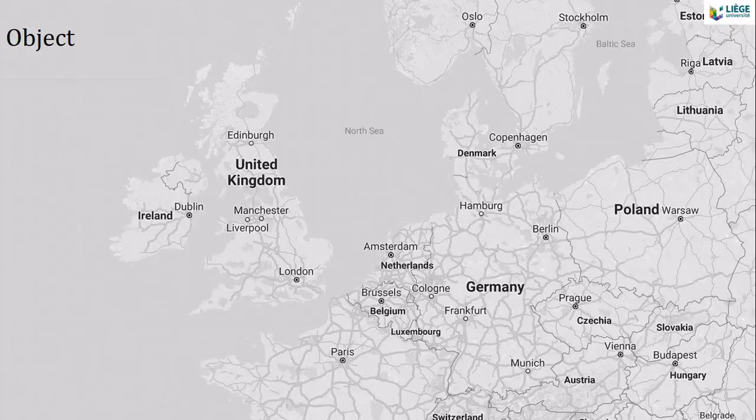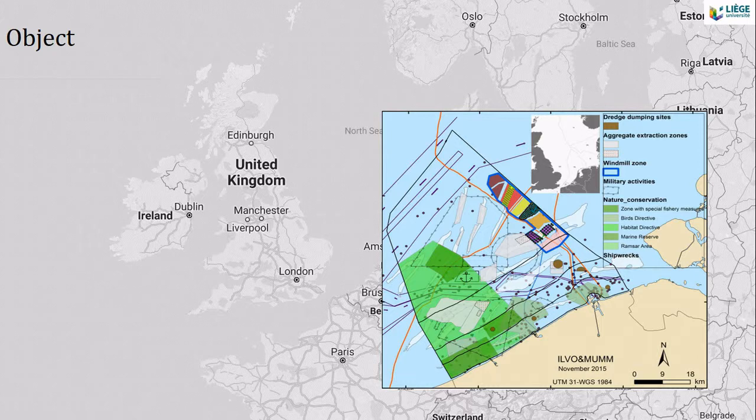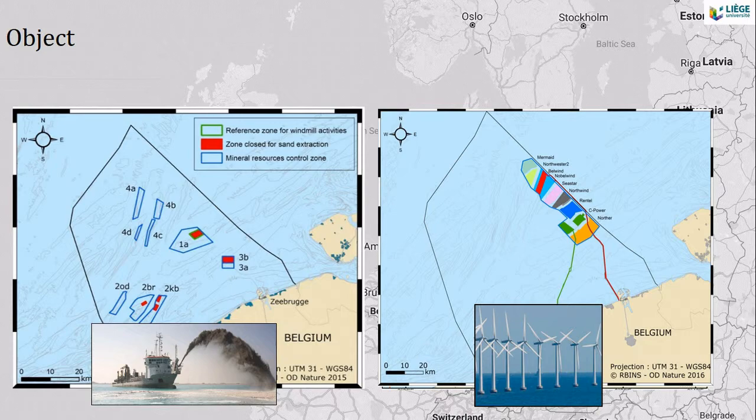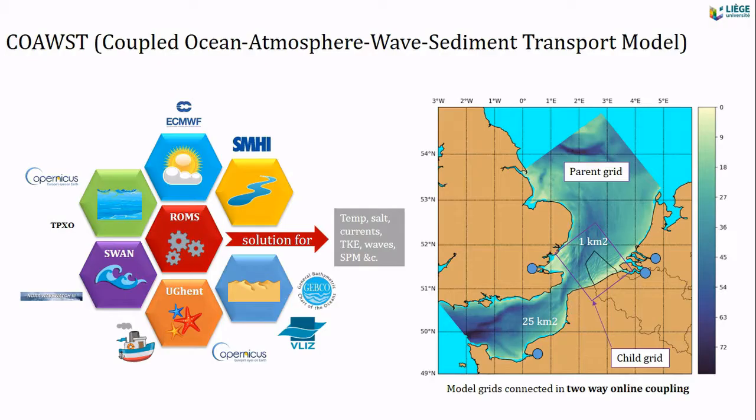The object of the study is the Belgian coastal zone, which is highly affected by human activities. In this study I'm going to focus on two of them: aggregate extraction and subsequent dumping, and the operation of wind farms. For this study I used coupled models — a core hydrodynamic model coupled with a wave model, coupled with a sediment model.